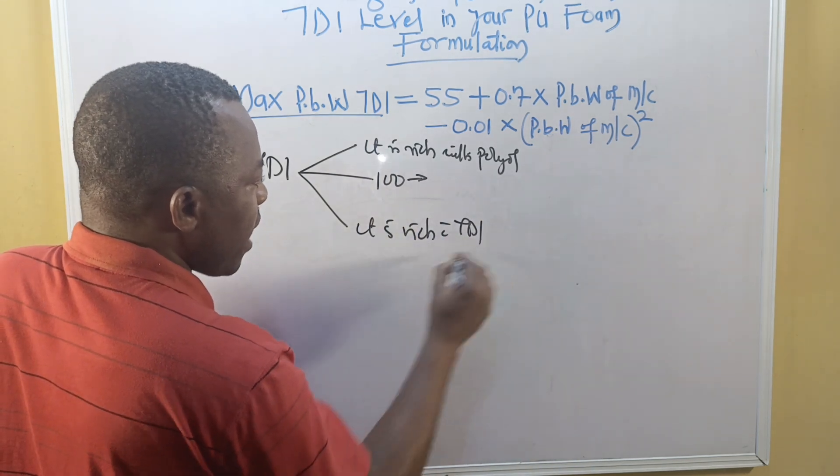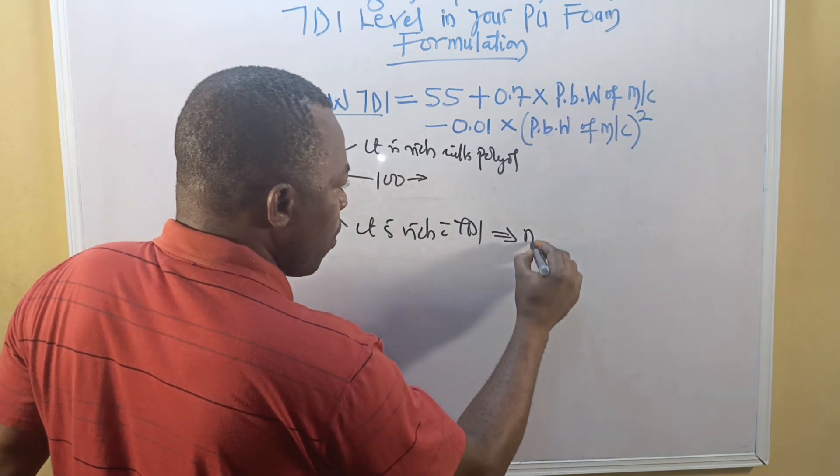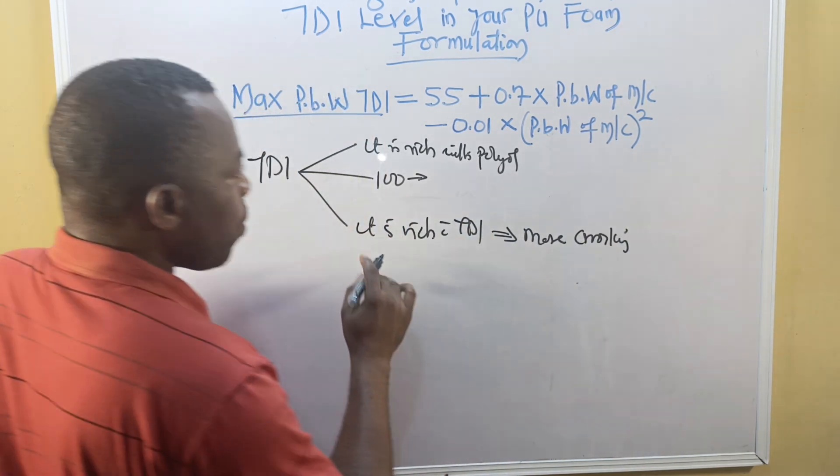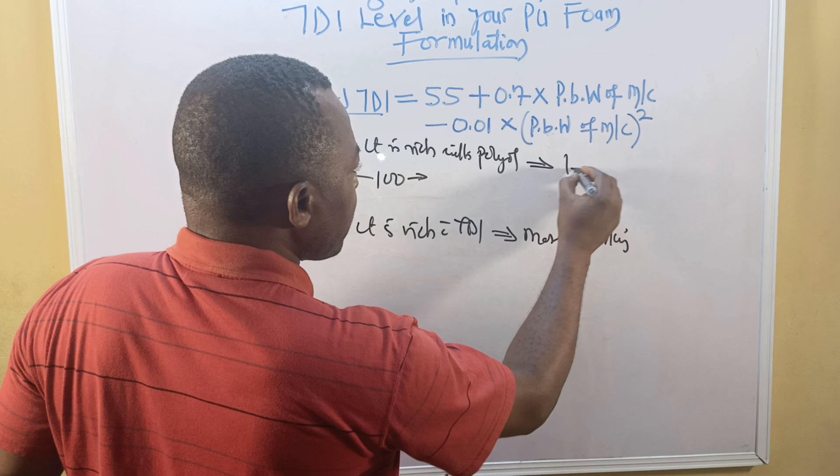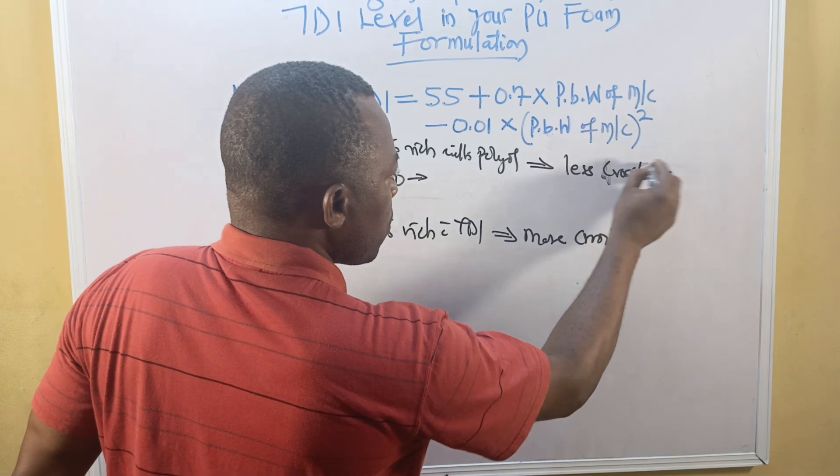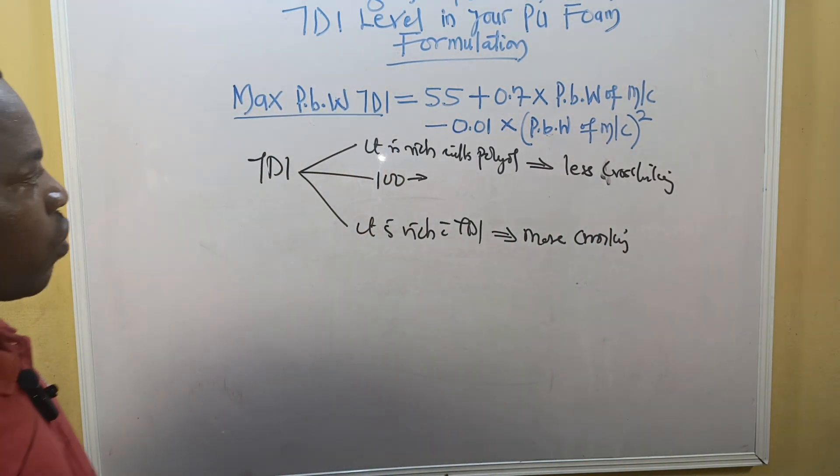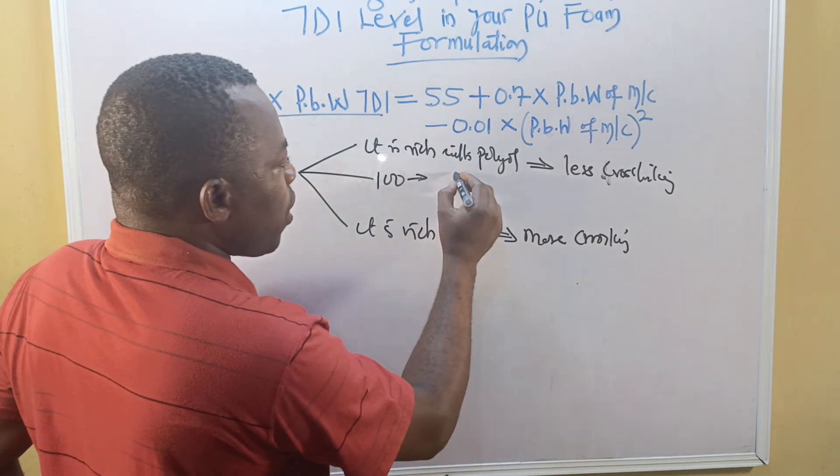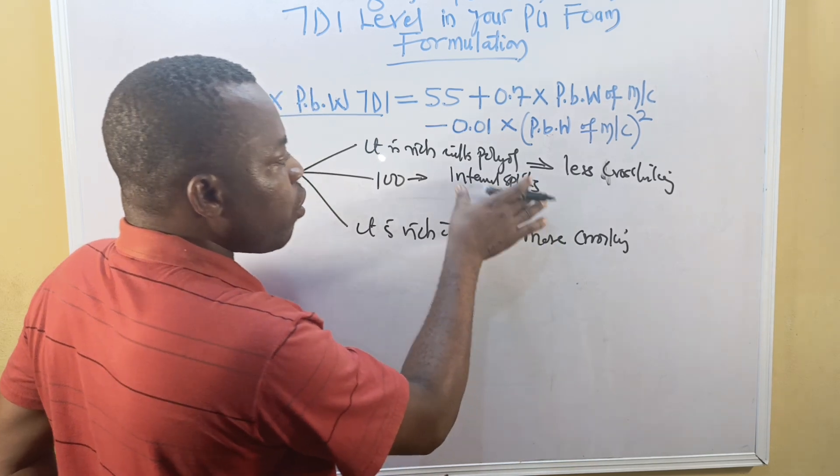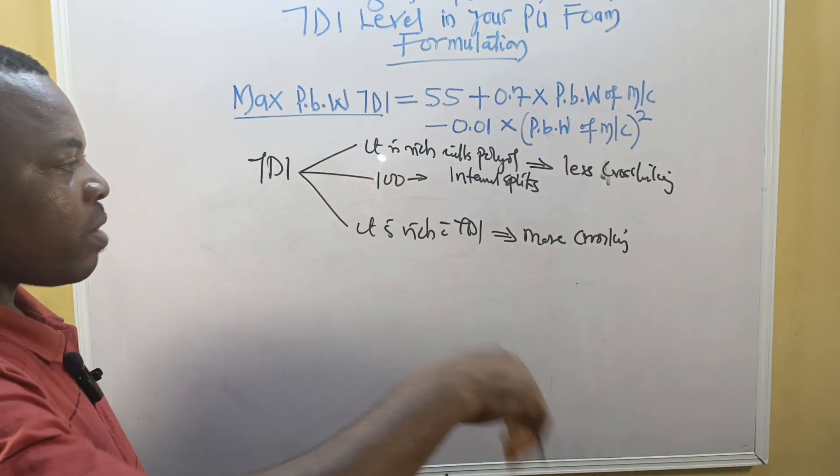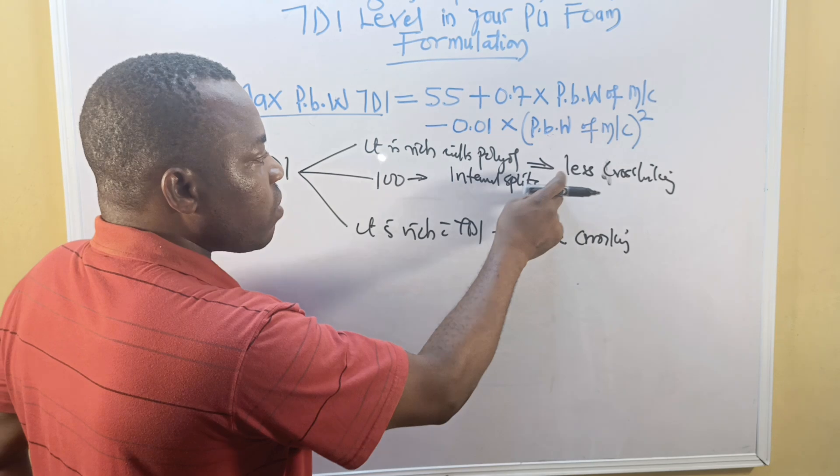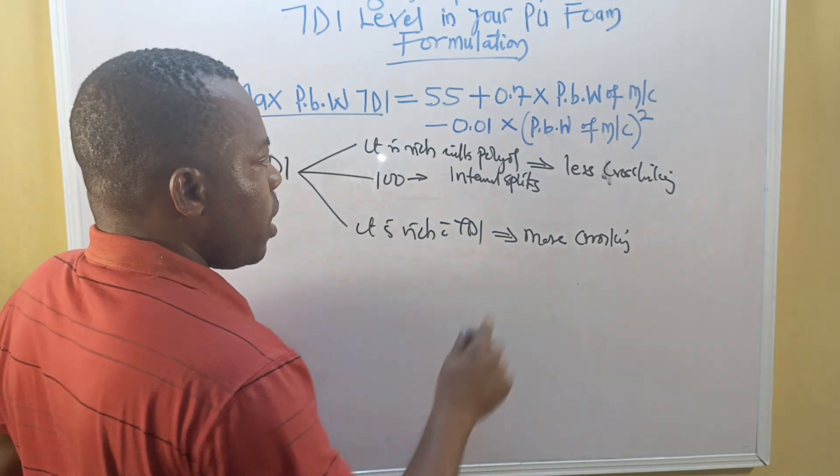TDI index of 100 means exact stoichiometric balance. Less than 100 means it is rich with polyol. Higher than 100 means it is rich with TDI. In this case we have more cross-linking in the reaction. With less than 100, we have less cross-linking.